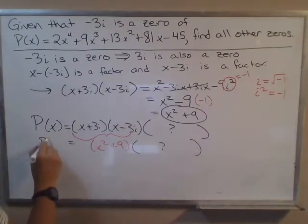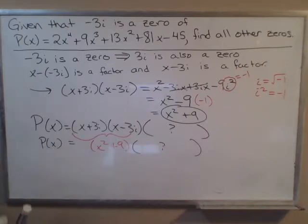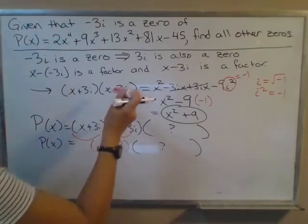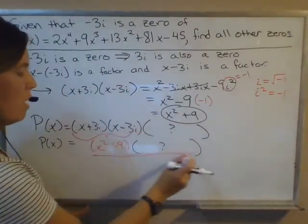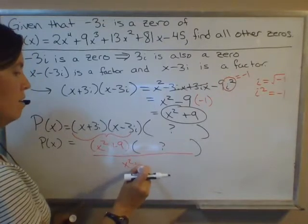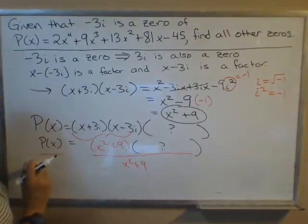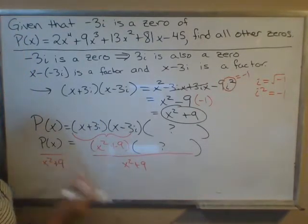Instead of dividing individually by x + 3i and then x - 3i, I'll just divide by x^2 + 9 so I only have to divide once. I can divide out both factors at the same time.